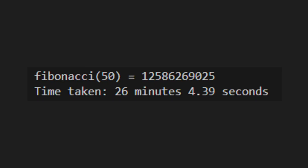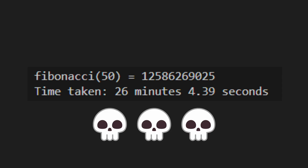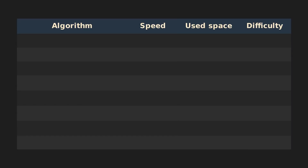Like, really slow. Computing just the 50th Fibonacci number took me more than 26 minutes. We are going to rate each algorithm on three aspects: speed, how much space it uses, and how hard it is to implement.